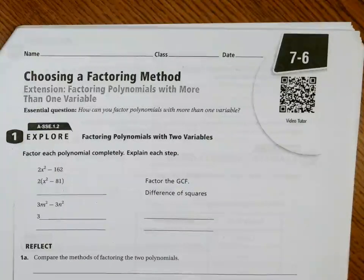Welcome back. This is Mrs. Rubright with Algebra 1 Honors. Today's lesson is 7-6, Choosing a Factoring Method.